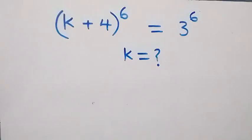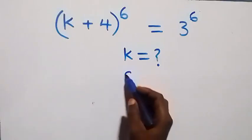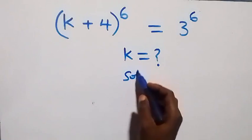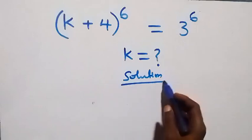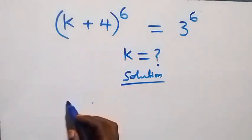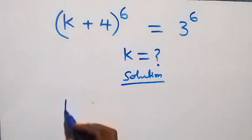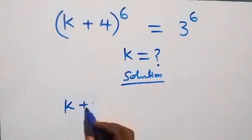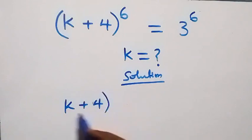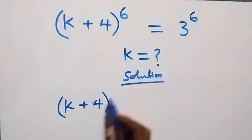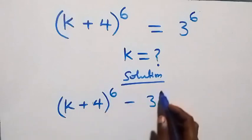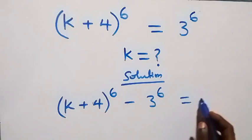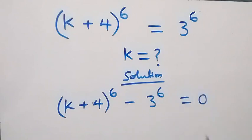Hello, you're welcome. How to solve this nice exponential equation. Starting from here, let's take 3 raised to power 6 to the left-hand side, then this becomes k plus 4 raised to power 6 minus 3 raised to power 6 equals to 0.